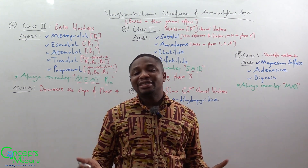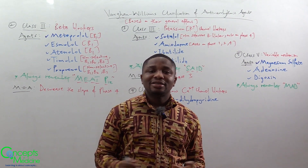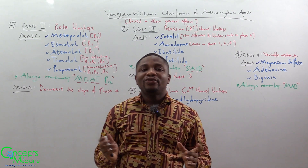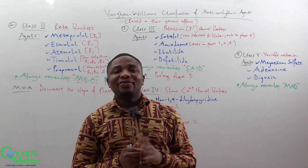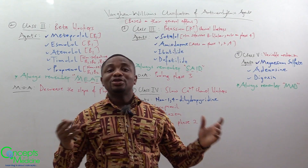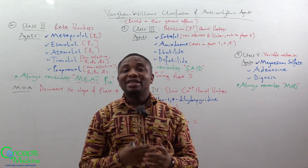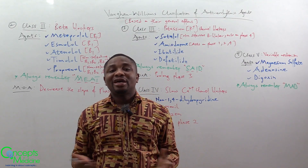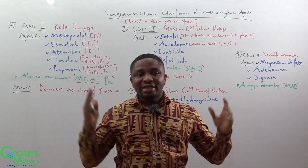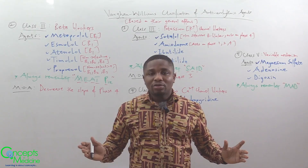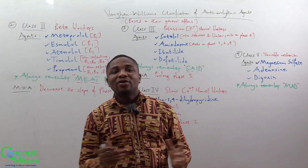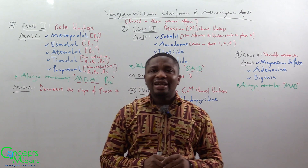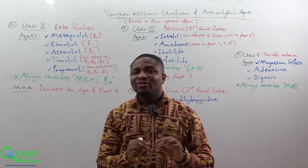Class 5 agents have a variable mechanism. To remember them, use the mnemonic 'MAD': M for magnesium sulfate, A for adenosine, and D for digoxin. They have a variable mechanism, meaning they can act on all the phases in variable ways.